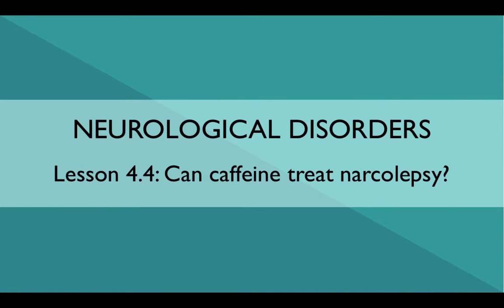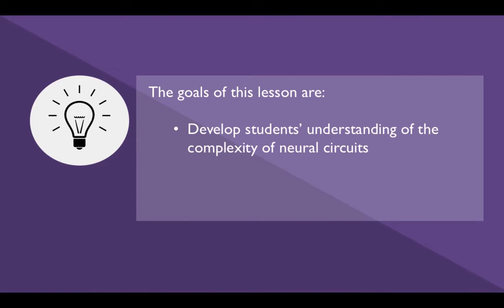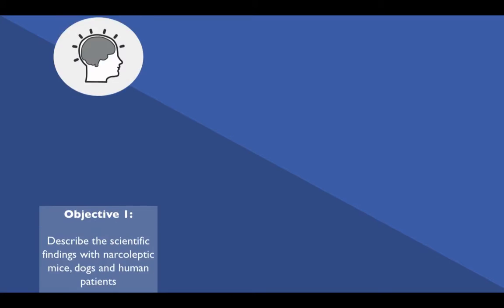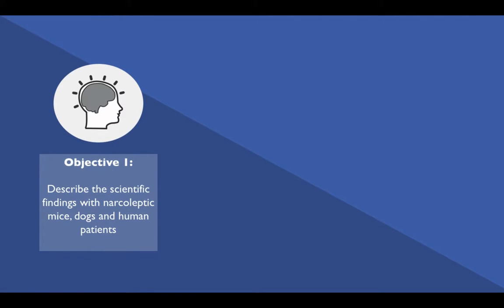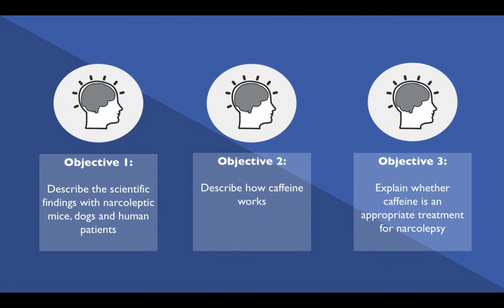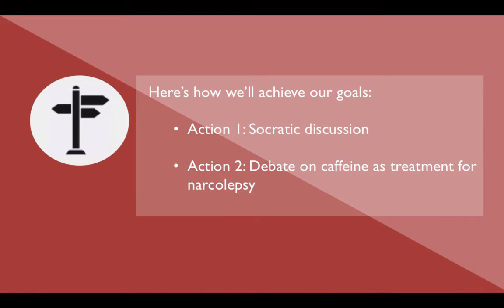Neurological Disorders Lesson 4.4: Can Caffeine Treat Narcolepsy? The goals of this lesson are to develop students' understanding of the complexity of neural circuits and to introduce how drugs like caffeine can impact the functioning of neural circuits. At the end of this lesson, students should be able to describe the scientific findings with narcoleptic mice, dogs, and human patients, describe how caffeine works, and explain whether caffeine is an appropriate treatment for narcolepsy. We'll achieve our goals through a Socratic discussion and debate on caffeine as a treatment for narcolepsy.